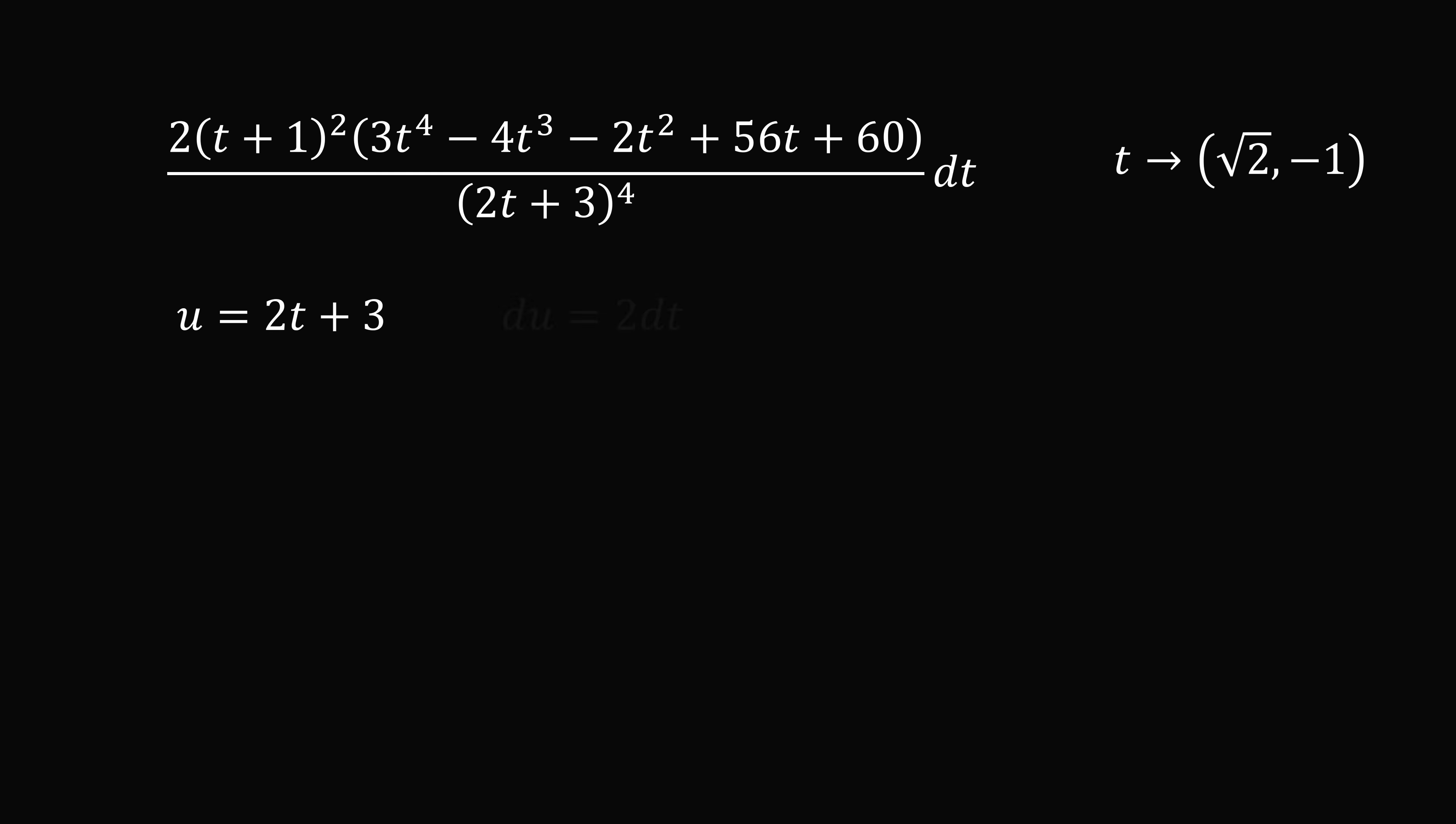We can solve this for t. We can also say du is equal to 2 dt. We change the limits of integration. So u goes from 2 root 2 plus 3 to 1. So doing this substitution where each time we see t, we solve for t in terms of u and substitute in. We're going to end up with something that looks like this.